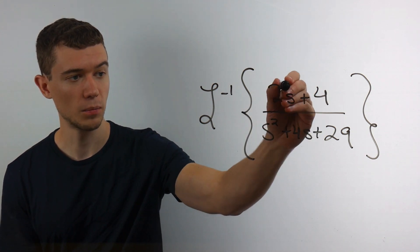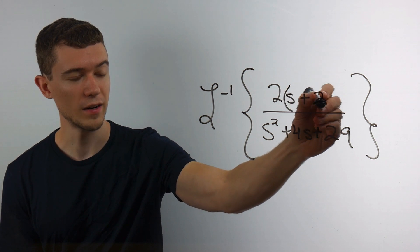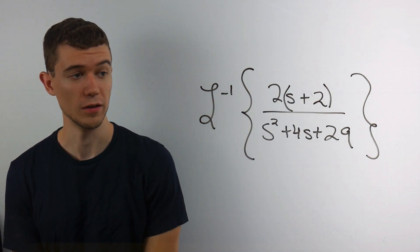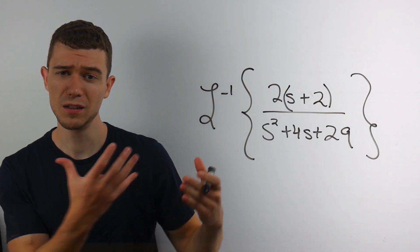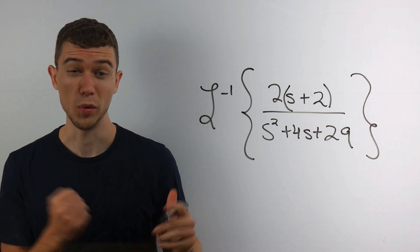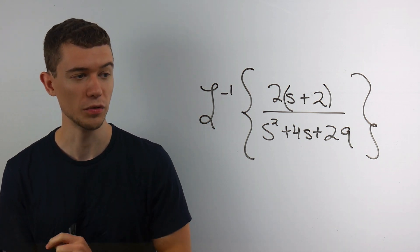In fact, I can just pull out a 2 since the greatest common factor of the numerator is 2. But the denominator, I don't know. What we can do is complete the square. So that's what we'll do.